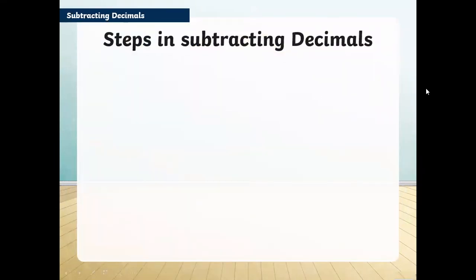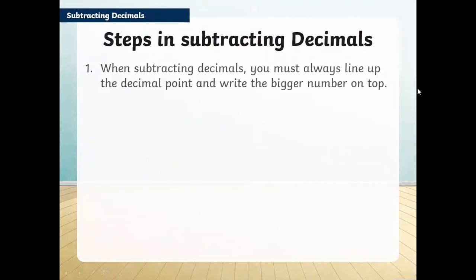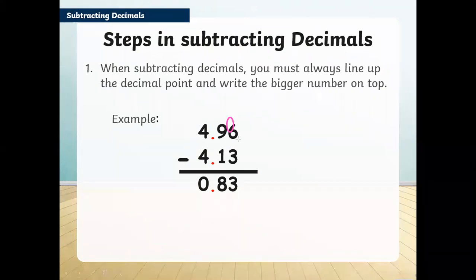Steps in subtracting decimals. The first step is that when subtracting decimals you must always line up the decimal point and write the bigger number on top. For example, we have 4.96 and we're subtracting 4.13 from it. We start from 6 and 3 from the right side always. 6 minus 3 is 3, then 9 minus 1 is 8, and 4 minus 4 is 0.